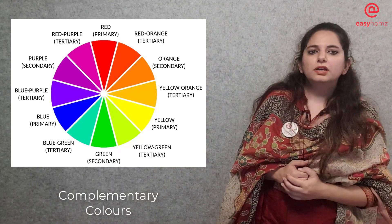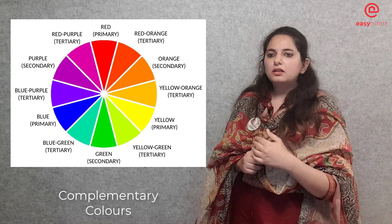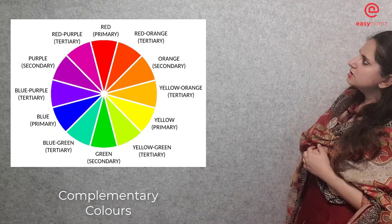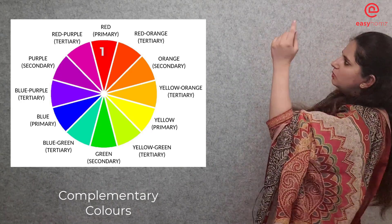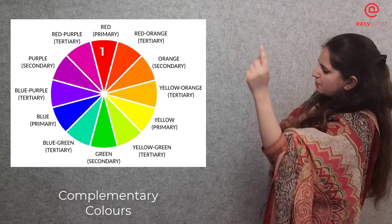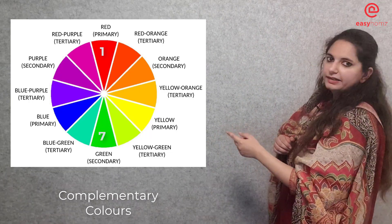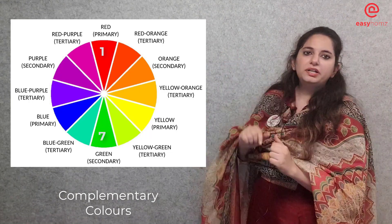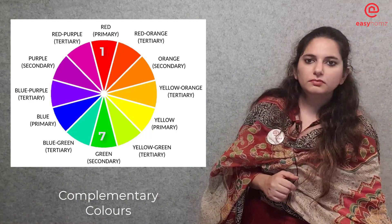The complementary color scheme. These are the colors that stand opposite each other on the color wheel. For example, the color red stands opposite the color green. These two colors complement each other. The complementary colors absorb all the light which the other color is reflecting, so they are in contrast with each other.